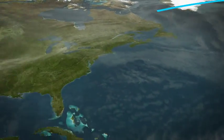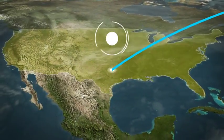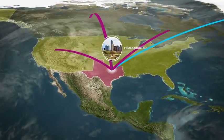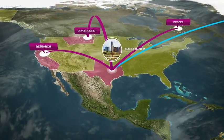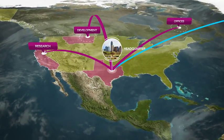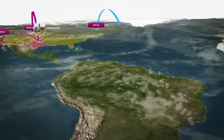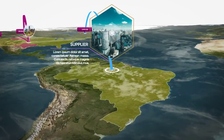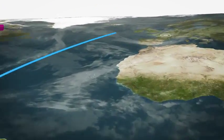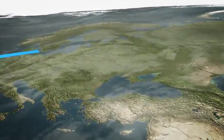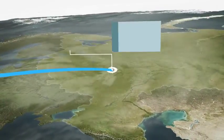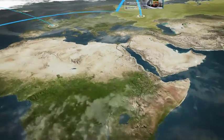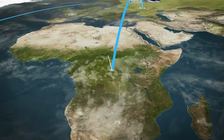How many times did you have to create an animation for you or for your customers in order to show and link different places in the world? Of course you can do it spending a lot of time and placing a ton of keyframes. But what would you think about a project that automatically creates a 3D map animation without the need to add, move or remove keyframes?